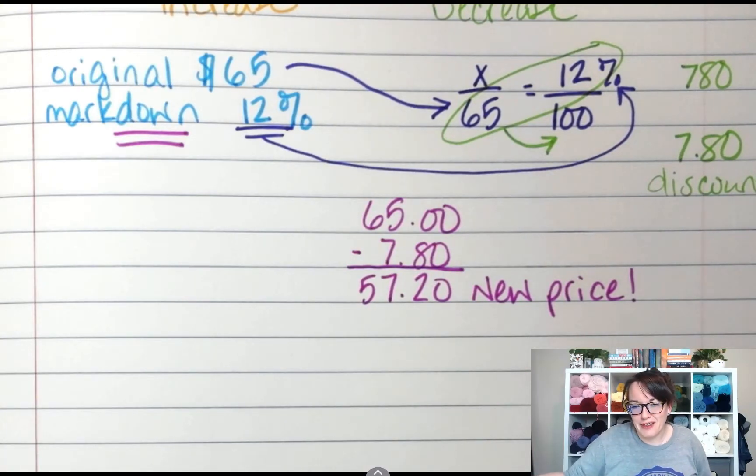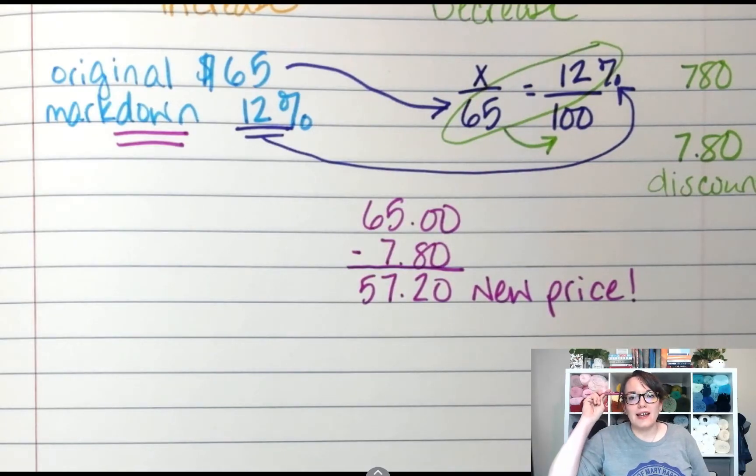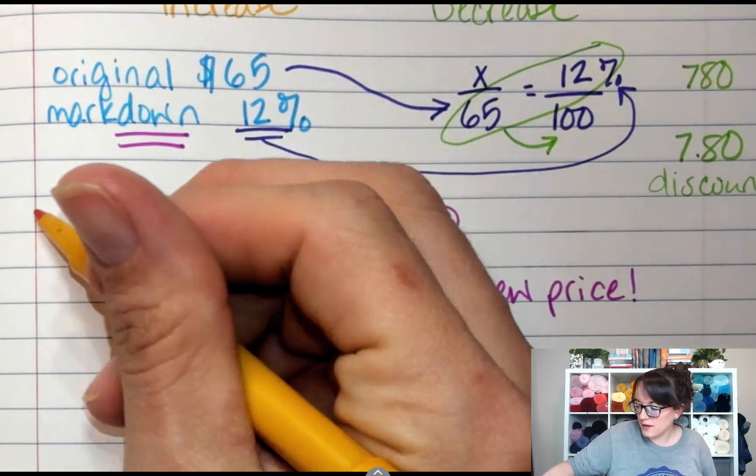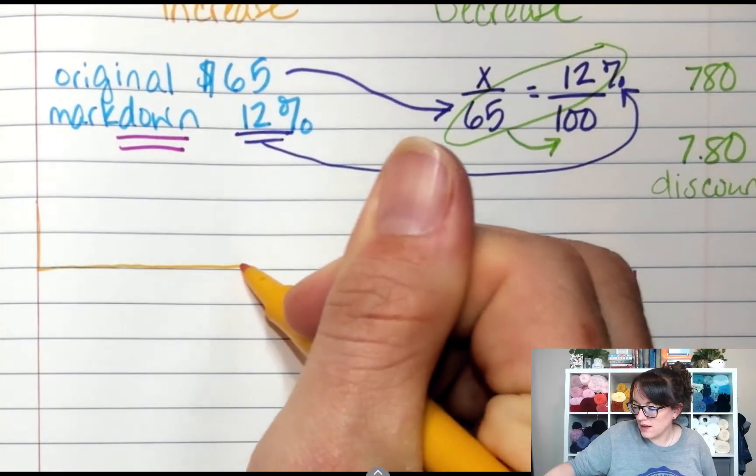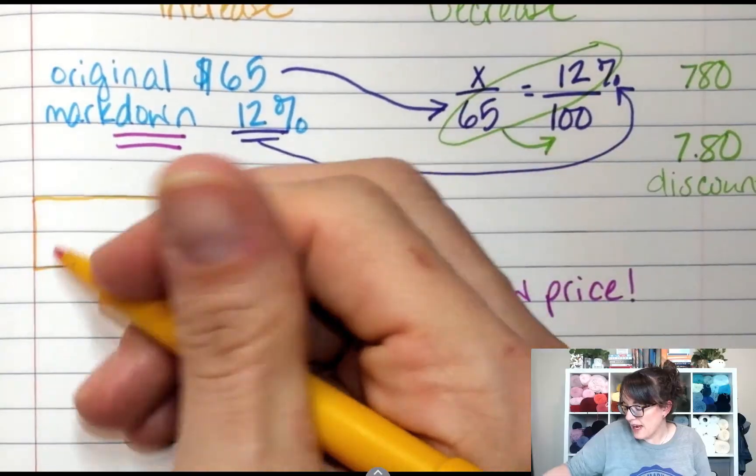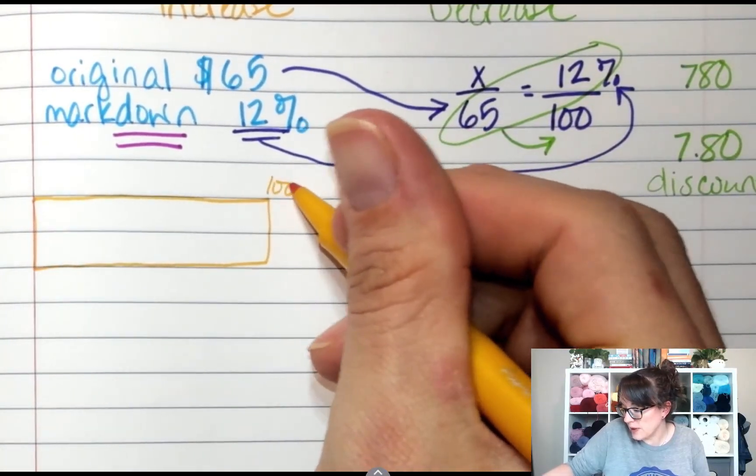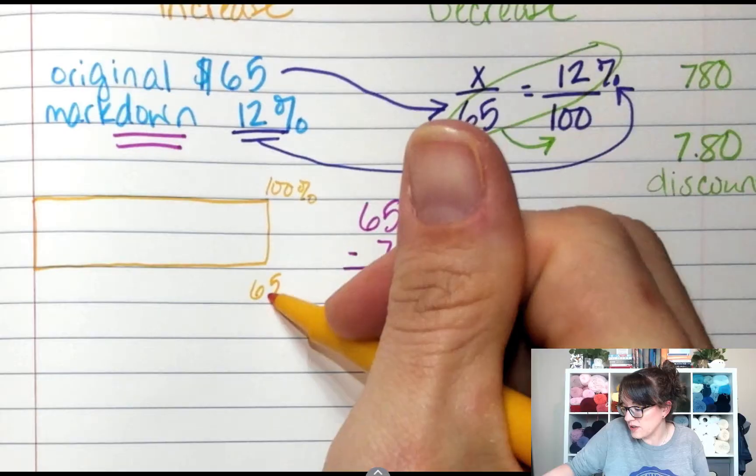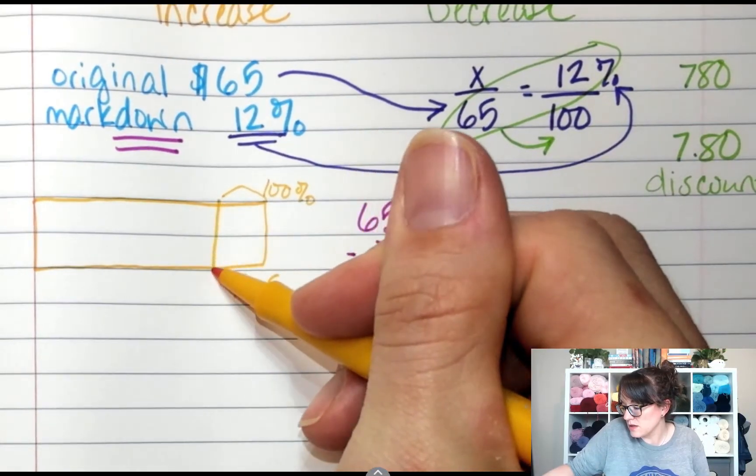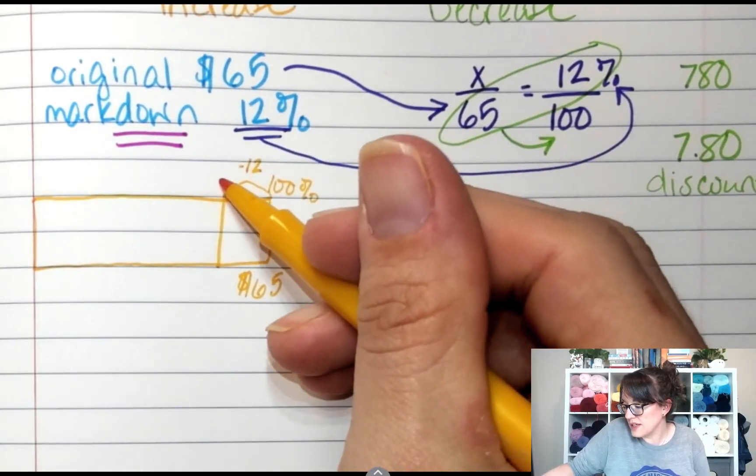There's another way you can kind of think about this. If I took 12% off the price, if the original price is 100% and I cut 12% off, what percent am I paying? 88%. So if I have my ratio table and I know that the original price, 100% of the price, is $65, and I'm going to cut off 12%, so this is 88%.